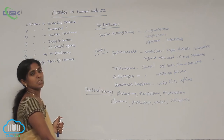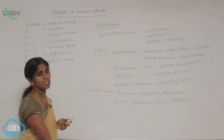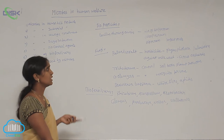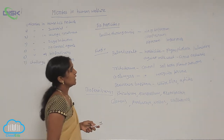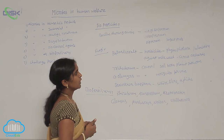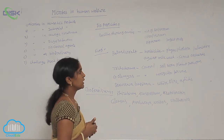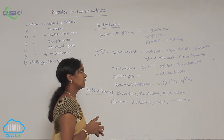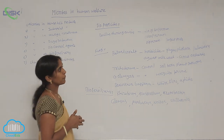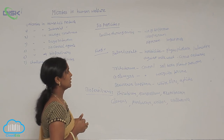Phytophthora palmivora is the first mycoherbicide, and also the first bioherbicide. It is obtained from Phytophthora palmivora and works against milkweed in citrus orchards. This makes it the first mycoherbicide.